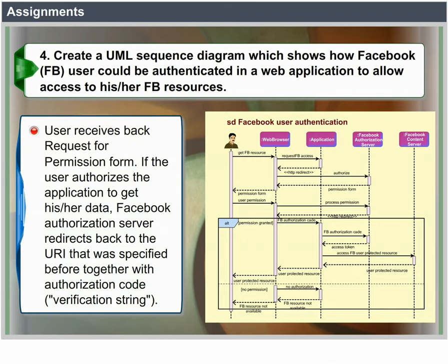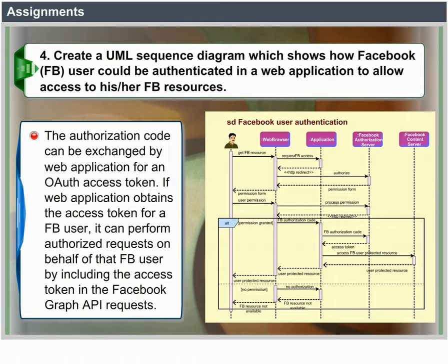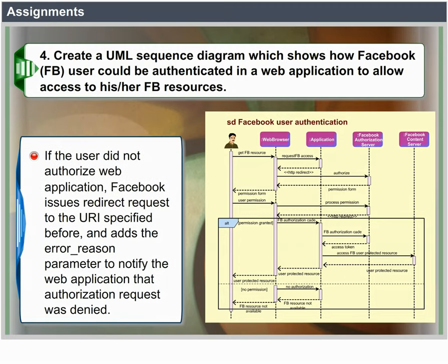The user receives back a request for permission form. If the user authorizes an application to get his or her data, the Facebook authorization server redirects back to the URI that was specified before, together with an authorization code. The authorization code can be exchanged by the web application for an OAuth access token. If the web application obtains the access token for a FB user, it can perform authorized requests on behalf of that FB user by including the access token in the Facebook Graph API request. If the user did not authorize the web application, Facebook issues a redirect request to the URI specified before and adds an error reason parameter to notify the web application that the authorization request was denied.